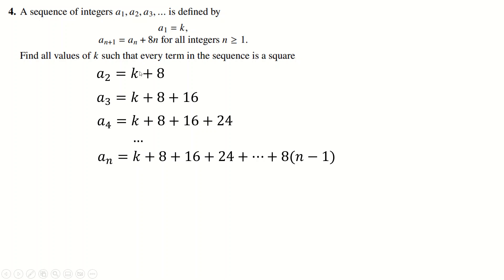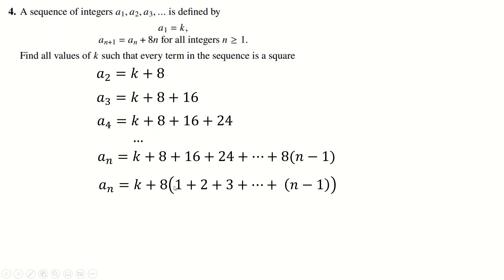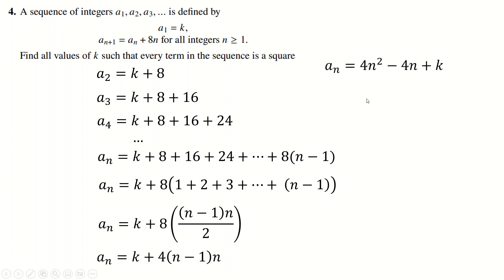Simplifying: factorize out 8 from all the added terms to get 8 times (1 + 2 + 3 + ... + (n−1)). Using the consecutive sum formula, this is (n−1) × n / 2. With 8 divided by 2 giving 4, expanding gives the quadratic 4n² − 4n + K. We want this quadratic to be a perfect square for all n, which means we need to find K such that the expression is always a complete square.